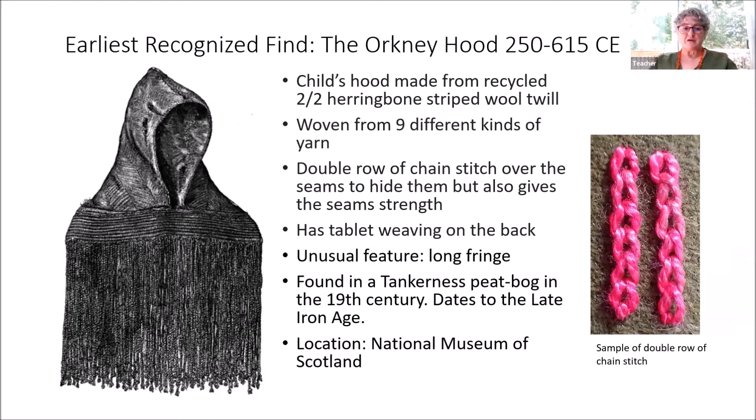It has tablet weaving on the back, and the unusual feature for the spine is a long fringe. We don't know if long fringes were unusual at the time, but it's one of one in that area. This was found in a peat bog in the 19th century and is currently housed in the National Museum of Scotland. I did an example of a double row of chain stitch so you can see what that looks like — of course, it would be much smaller when done in scale.